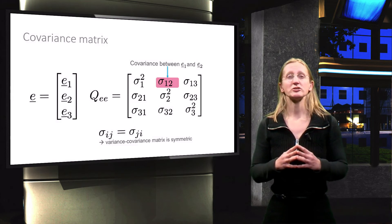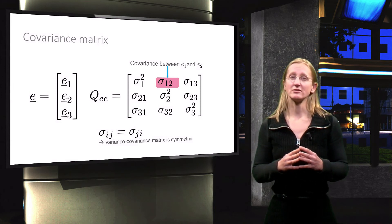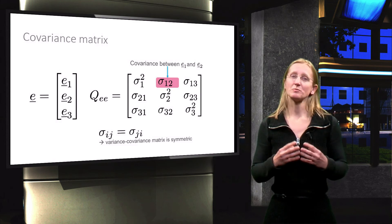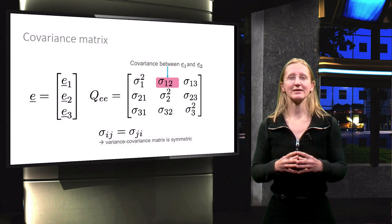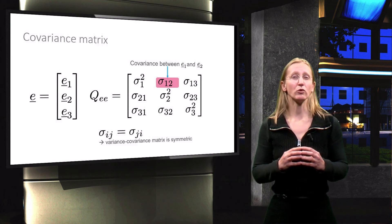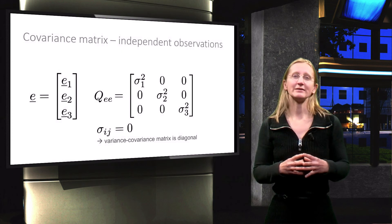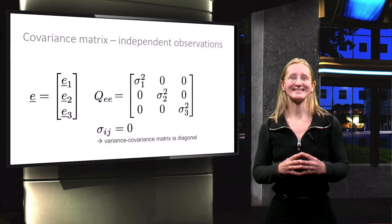In most situations, different observations and thus different random errors are independent, which means that they are uncorrelated and their covariances are therefore all equal to zero. Consequently, the covariance matrix is then diagonal.